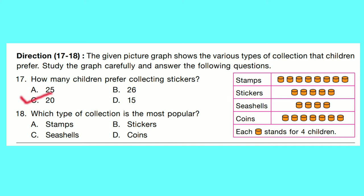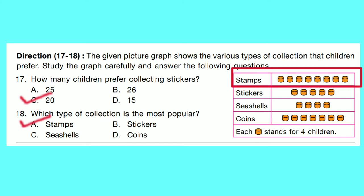Question number 18: Which type of collection is the most popular? There are 8 pictures for stamps. Each picture stands for 4 children, so 8 pictures represent 8 into 4 equals 32 children. Correct option is A: Stamps. We find where the maximum number of pictures is.